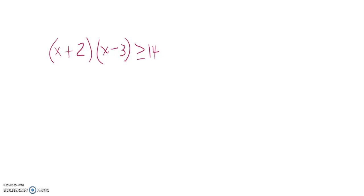So we are going to try and figure out when this is greater than or equal to 14. Now, I can't just use my zero property here because it's not compared to 0, it's compared to 14. So what I'm going to have to do is multiply this out and then subtract the 14 to bring it over. Get it equal to 0 and then I can do it.